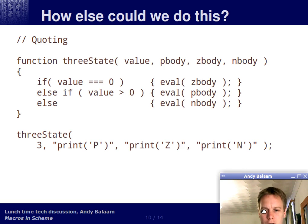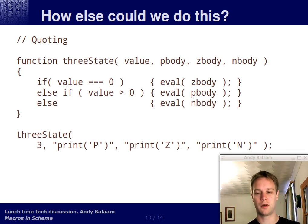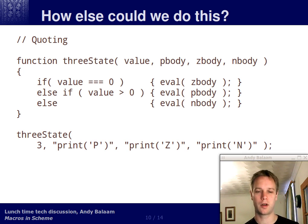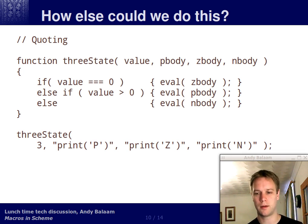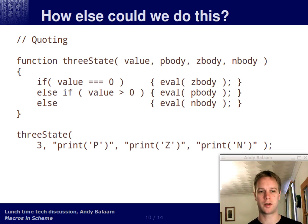Another thing is quoting — the language we talked about before that has quoting is JavaScript. Here we have a function called three-state that takes in four arguments: a value and three bodies — but the three bodies are strings, and depending on the value it evals one of those strings. This is analogous to quoting in Scheme. The difference is that in Scheme you're working within the language with lexing and parsing, so you know your code is reasonably well formed. In JavaScript you're passing in a string that could contain anything, and you won't find out about a syntax error until you actually execute that part.